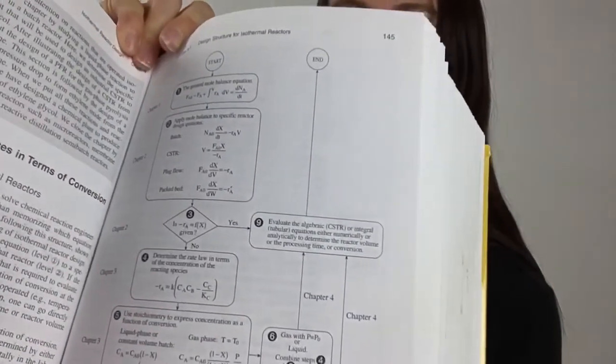So it's this chart, it's figure 4-1, and it's called Isothermal Reaction Design Algorithm for Conversion. And that's what it looks like.